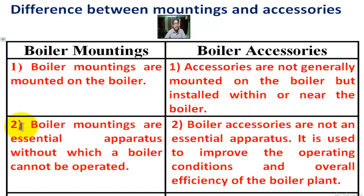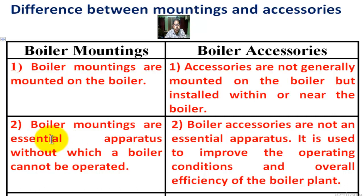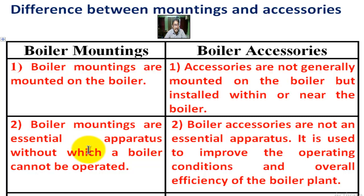Number 2. Boiler mountings are essential apparatus without which a boiler cannot be operated. They are components used for ensuring the safety of the boiler operation — a compulsory part of the boiler without which operation is impossible.